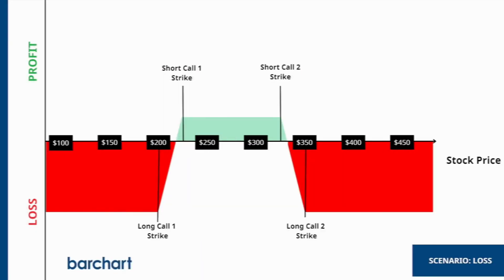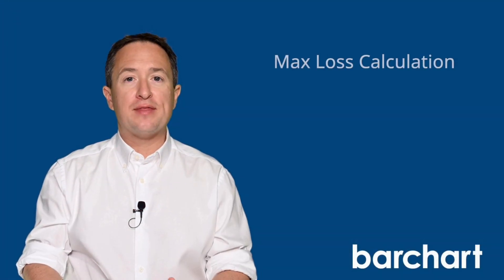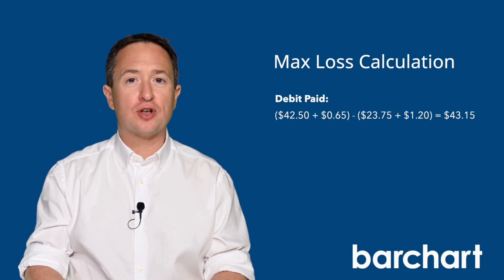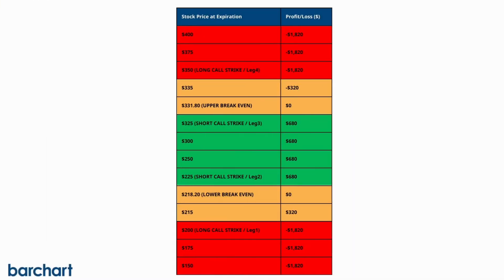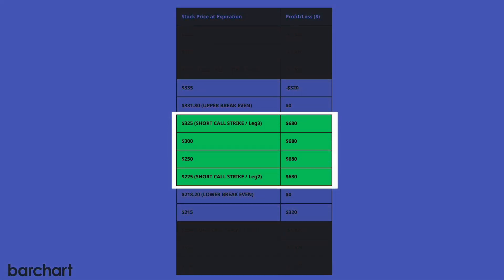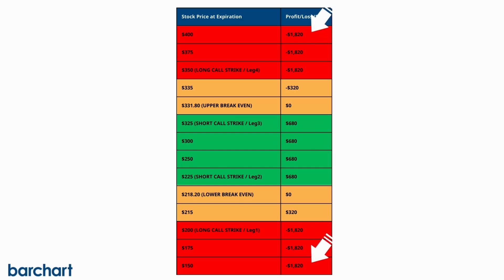If Tesla's stock price moves beyond either of the long strikes — that's below $200 or above $350 — your trade enters its maximum loss condition. The maximum loss is simply what you paid to enter the trade: $18.20 a share, or $1,820 per contract. The profit zone is in the middle between the two short strike prices. As the stock price moves above or below the short calls, the trade starts to lose money. If the stock moves beyond the long strikes, the maximum loss — the net debit paid — will be reached. That's why long call condors are perfect for low volatility assets, as they profit when the stock trades between a certain range.